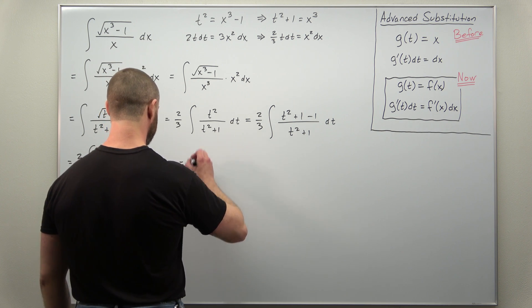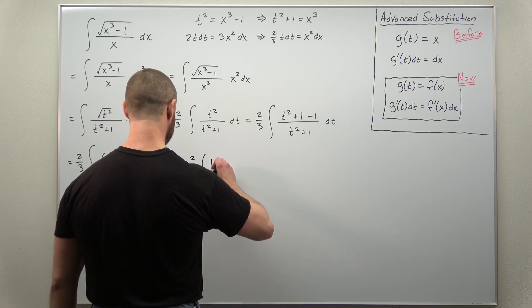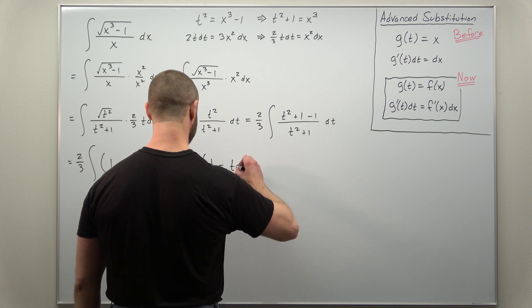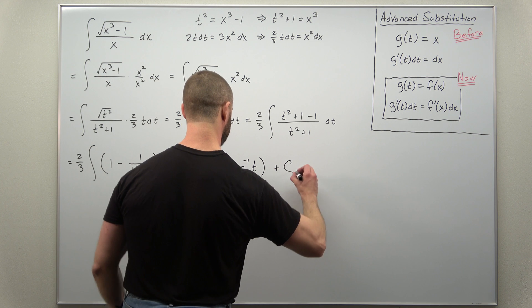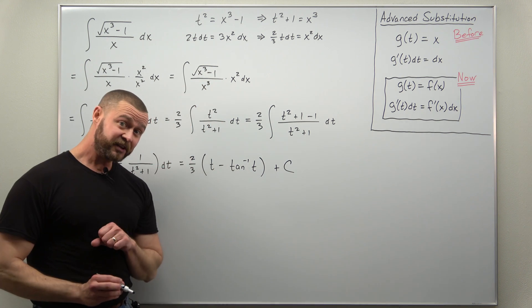So we'll write this antiderivative as two-thirds times t minus inverse tangent of t. And that's basically it.